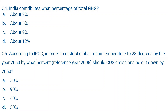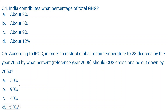Question number five: According to the IPCC — Intergovernmental Panel on Climate Change — in order to restrict global mean temperature to 2°C by the year 2050, by what percent should CO2 emissions be cut down by 2050 relative to the reference year 2005? The correct answer is D — 30 percent, with reference year 2005.